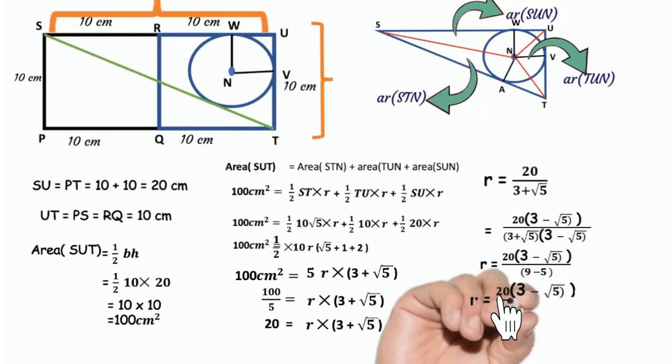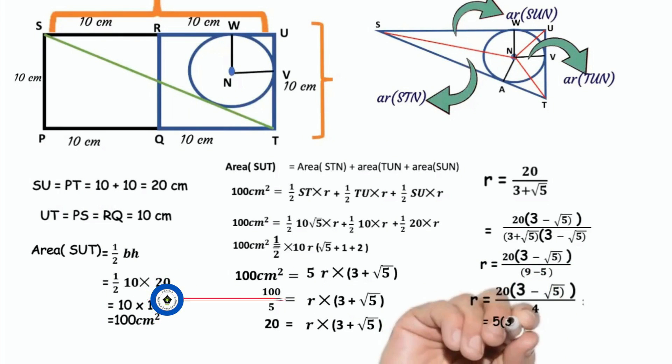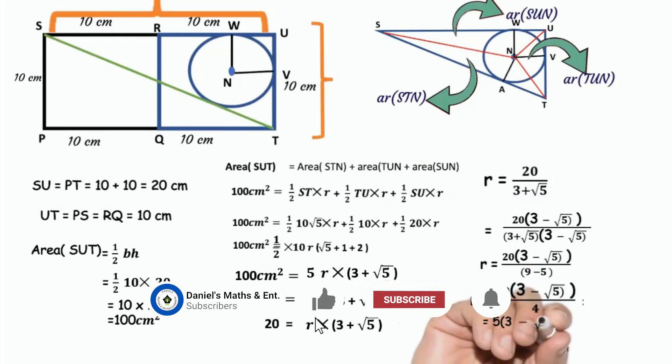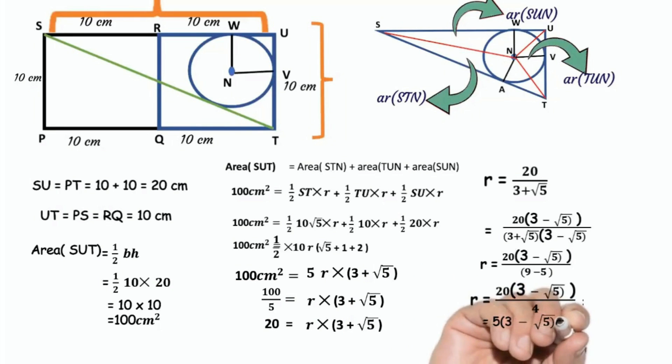20 divided by 4 is 5. So radius R equals 5 into 3 minus root 5 centimeters. I hope it's clear. Thanks for your support.